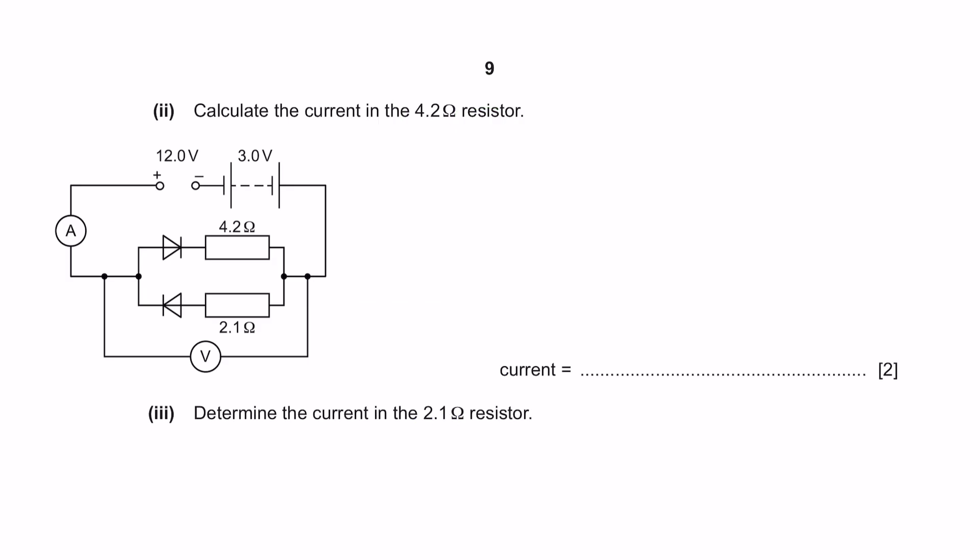Part 2, calculate the current in the 4.2 resistor. Let's first identify the information that we have. We know that potential difference is 9 voltage. We are asked to find the current and we know that the resistance is 4.2 ohms. This is pretty straightforward. According to Ohm's law, V equals I times R. Rearranging the formula, we will get a current flow of 2.1 amperes.